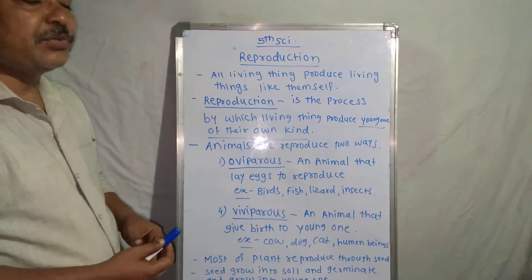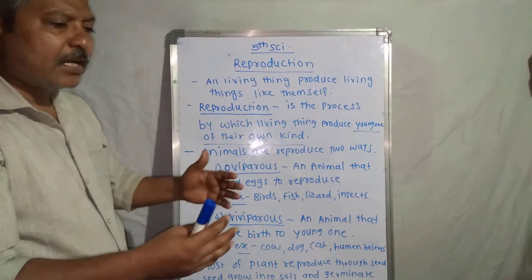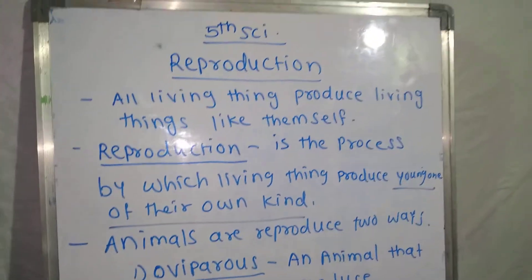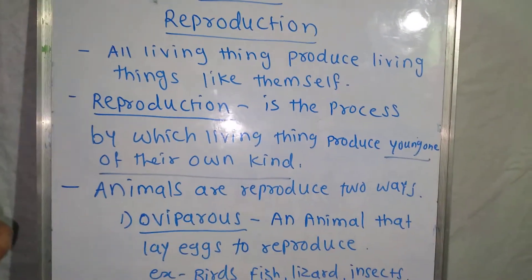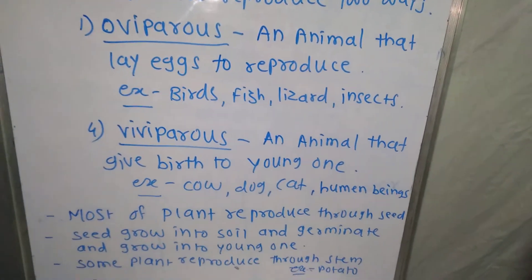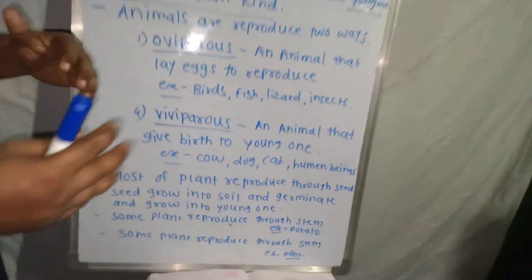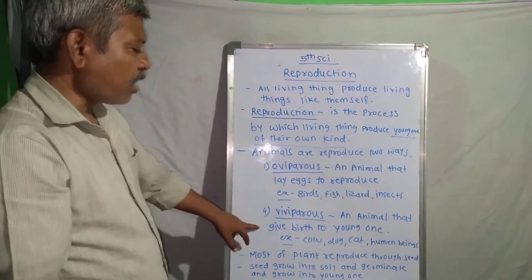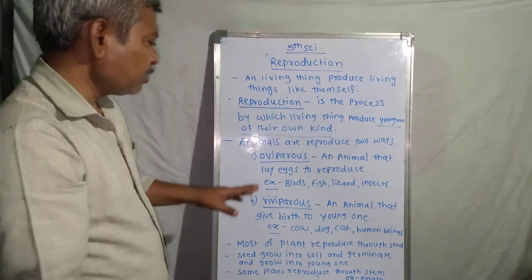The next one is viviparous — animals that give birth to young ones. As we know, we grow inside our mother's tummy, and the animal gives direct birth to young ones. Those animals are called viviparous. An animal that gives birth to young ones — the young ones are developed inside the mother's body. Examples: cow, dog, cat, human beings, elephant, and most developed animals reproduce through viviparous.